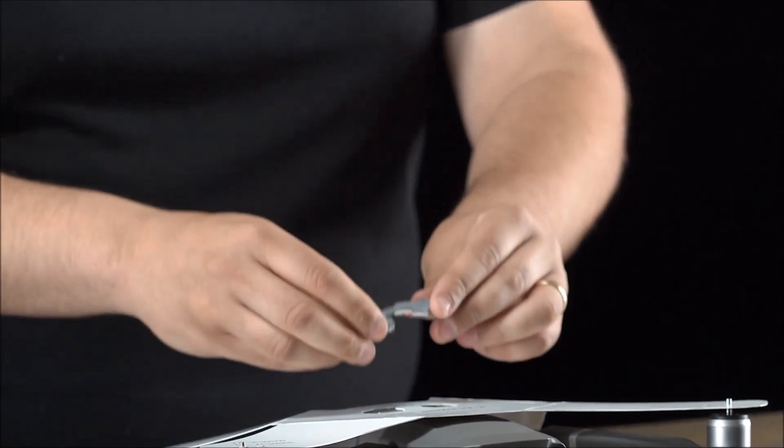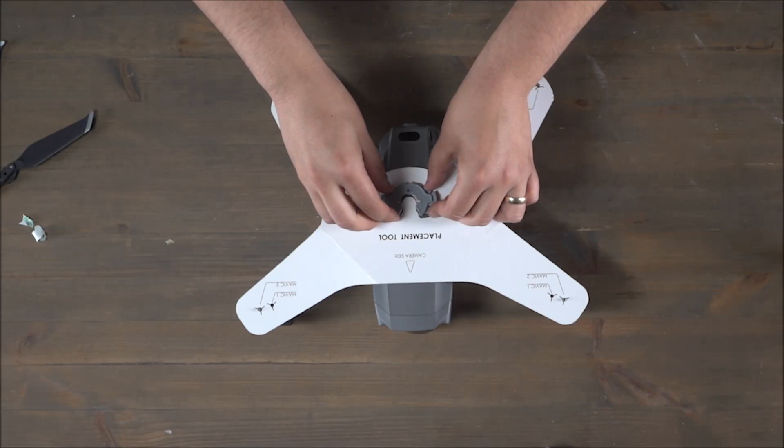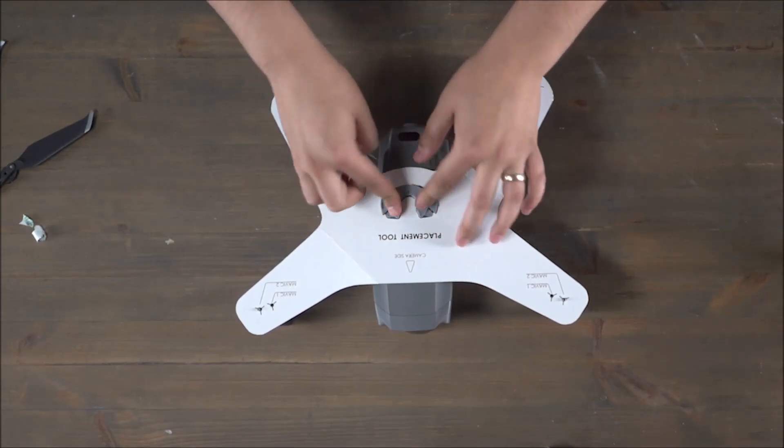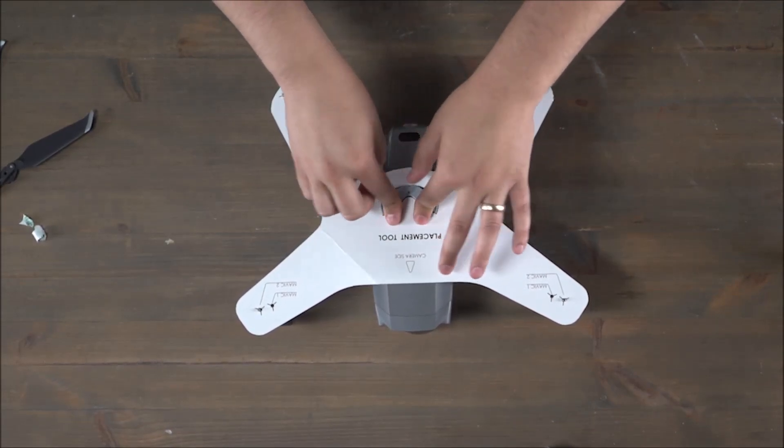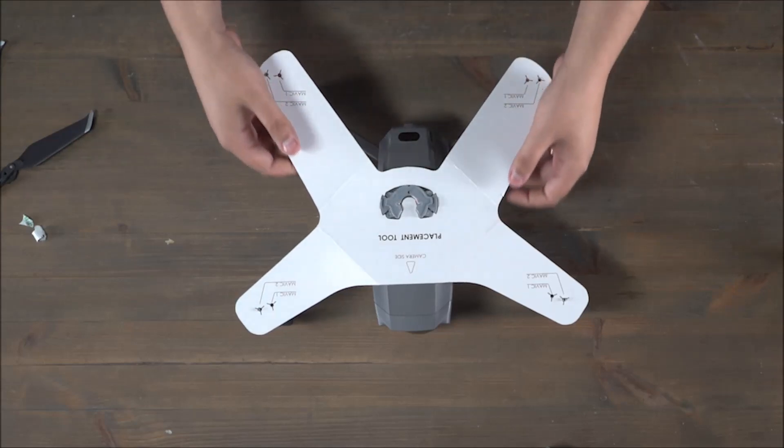Put the placement stamp on top of the placement tool. Make sure to push firmly so it stays in place, and then I can remove the placement tool.